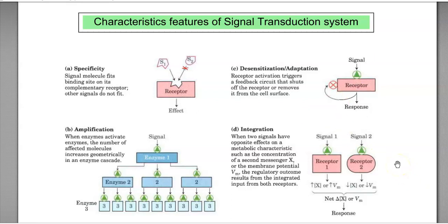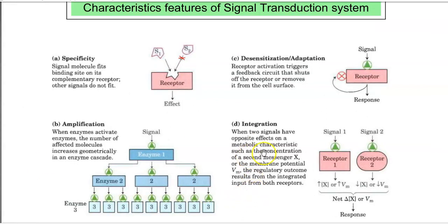The last one is integration. The term integration refers to joining two things. So from that itself, you can understand the effect will be the joining of two signals. Look at the point there. When two signals have opposite effects on metabolic characteristics such as concentration of the second messenger or membrane potential, the regulatory outcome—what is the output response—is based upon the integration of input signals from both receptors.